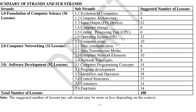The second strand is computer networking, with 32 lessons. The substrands are: data communication, data transmission media, computer network elements, and network topologies. The third and last strand is software development, with 92 lessons split into six substrands: computer programming concepts, program development, identifiers and operators, control structures, containers, and functions.